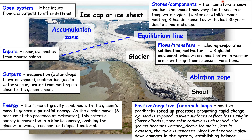Let's look at positive and negative feedback loops. Positive feedbacks speed up processes that promote rapid change. Here's an example: if land is exposed, darker surfaces will reflect less sunlight, therefore more solar radiation is absorbed, the ground becomes warmer, this leads to Arctic ice melting and more land being exposed — and then the cycle is repeated, making even more ice melt. That's a positive feedback loop because it promotes the rapid melting of the glacier. Meanwhile, a negative feedback loop is something that will slow down changes in the glacier, establishing balance.